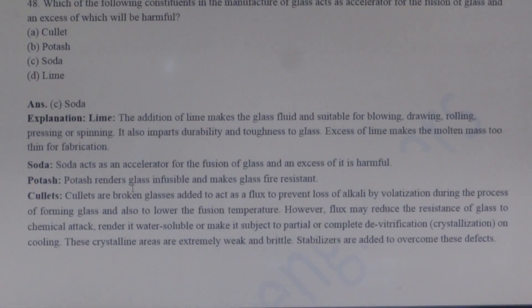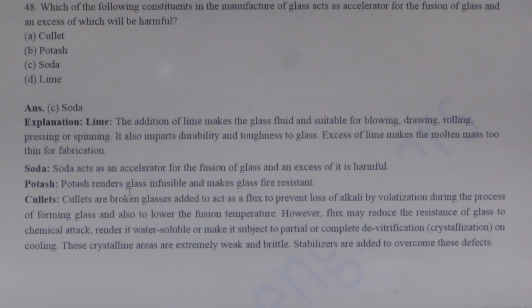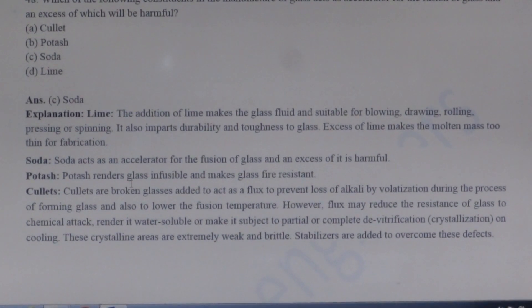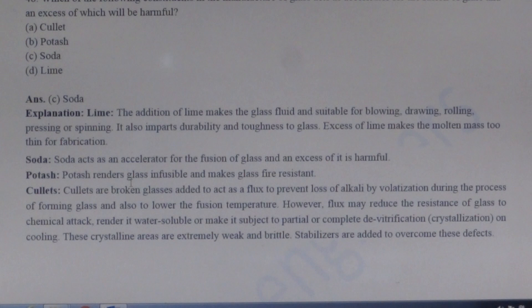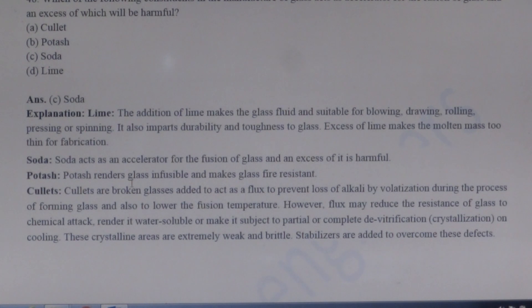Next question: Which of the following constituents in the manufacture of glass acts as an accelerator for the fusion of glass, and an excess of which will be harmful? Cullets are broken glass added to act as flux. Potash renders glass infusible and makes glass more heat-resistant. Soda is the correct answer as it acts as the accelerator. The addition of lime makes the glass fluid and suitable for blowing and rolling.